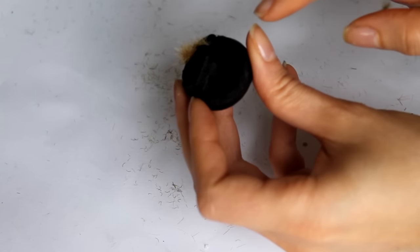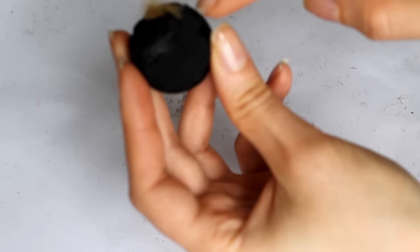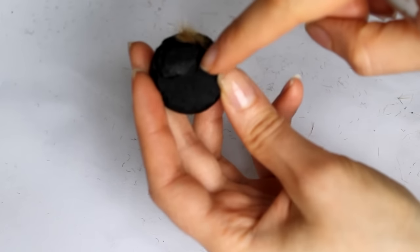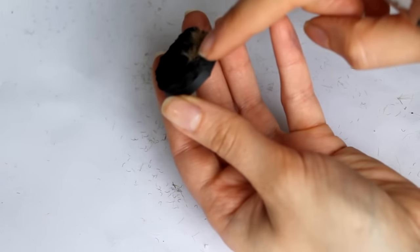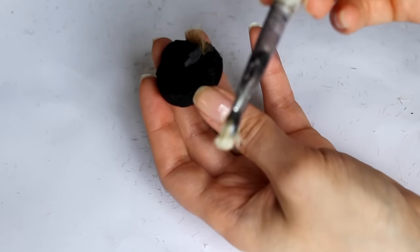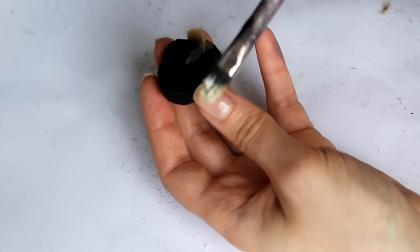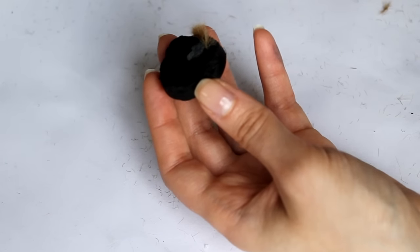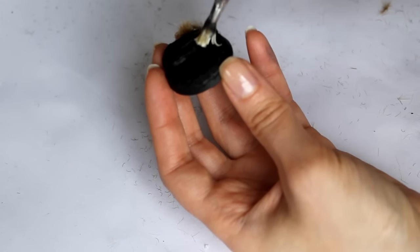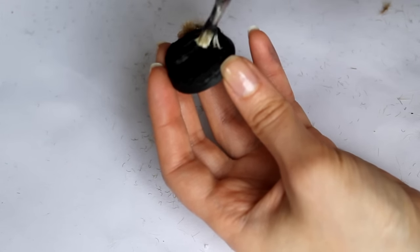To do that, we're going to apply PVA around under the rocks and around the rim. Just a little bit with just an old brush that you don't mind getting spoiled.